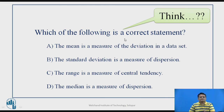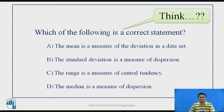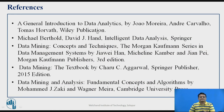Now consider which of the following statements are correct: the mean is a measure of deviation, standard deviation is a measure of dispersion, range is the measure of central tendency, or median is the measure of dispersion. Remember that mean, mode, and median are all measures of central tendency. Therefore, the only correct answer is that standard deviation is a measure of dispersion. That is all for today's online class. References used for this video presentation are provided. Thank you.